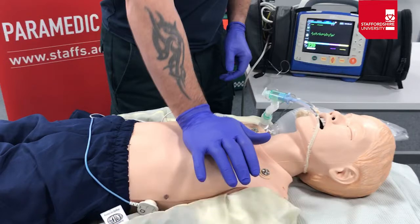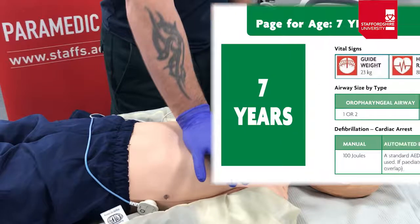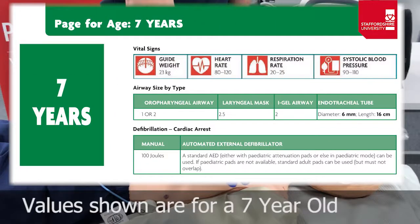You can then start to look at reversible causes — treatments are very similar to the adult ALS scenario, however there will be variations in things like quantities of fluid or glucose dependent on the reversible cause being treated. Familiarise yourself with the page-per-age pages of JR Calc as these will give you the appropriate dosages. Make sure you know where to find the cardiac arrest sections on those pages as it's not always immediately obvious on first glance.